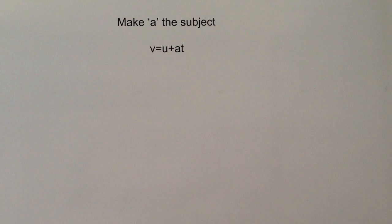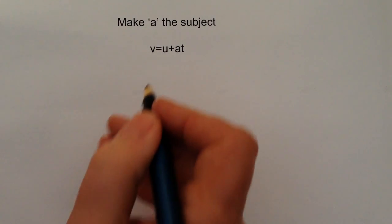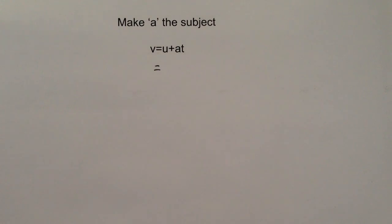Now it might be in certain circumstances that you need to make 'a' the subject of the formula, in other words a equals something. So the first thing I'm going to do is recognize this is an algebra expression, which basically means we're going to balance it around the equal sign. So whatever we do to the right hand side or the left hand side, we have to do the same to both sides.